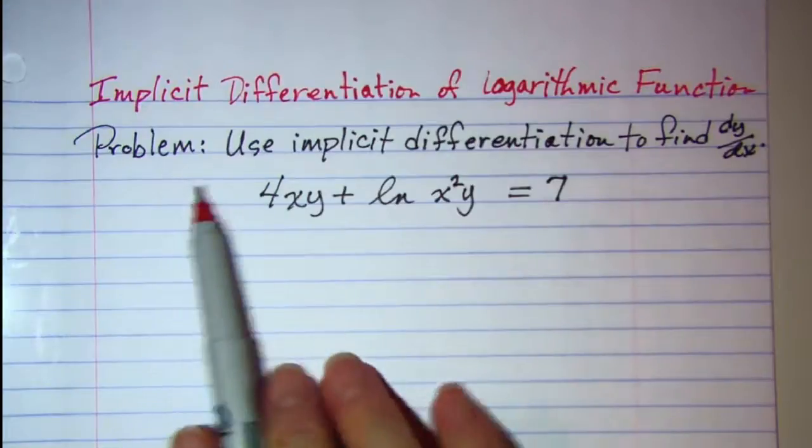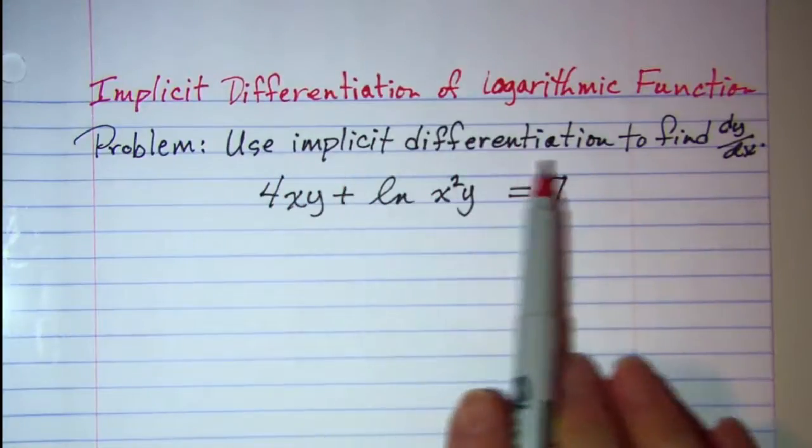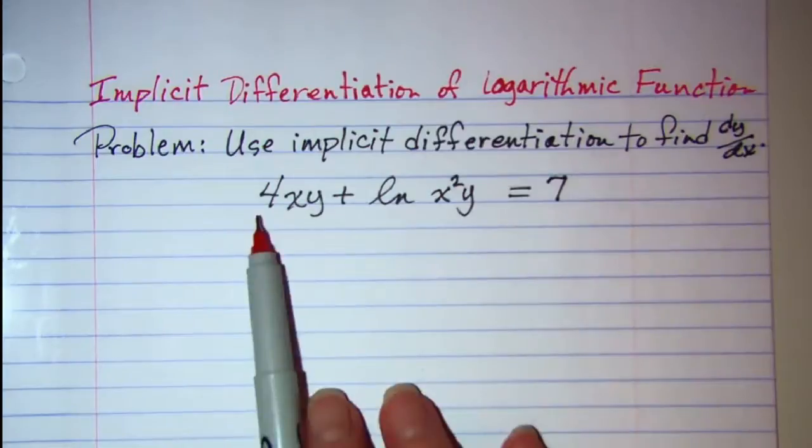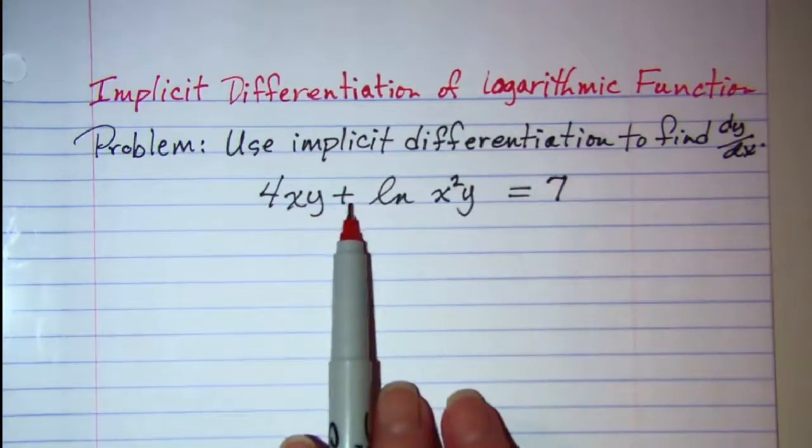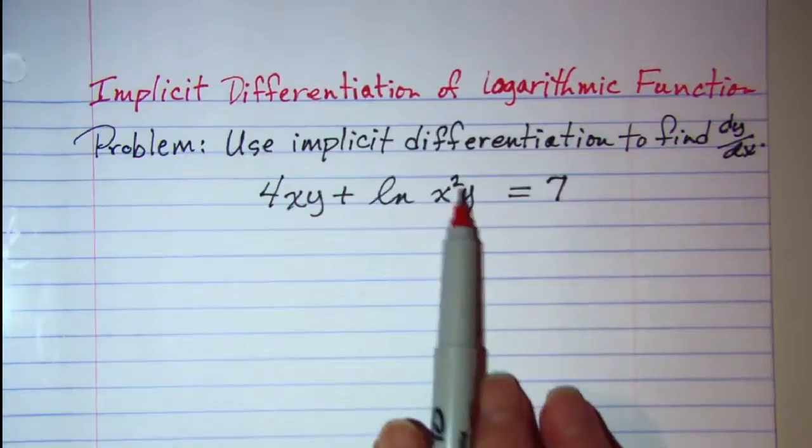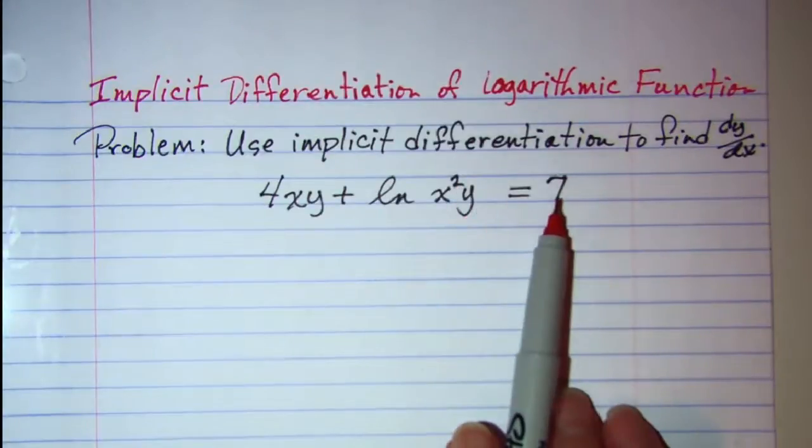Our problem is use implicit differentiation to find dy/dx and our function is 4xy plus ln x squared y equals 7.